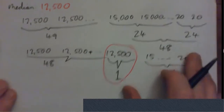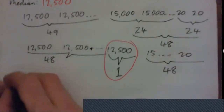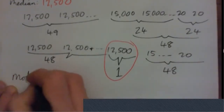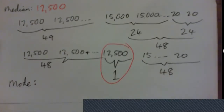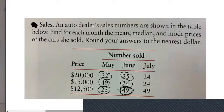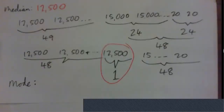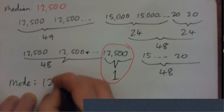For July, the mode — the most common sales price — is $12,500, because 49 cars were sold at that price in July.